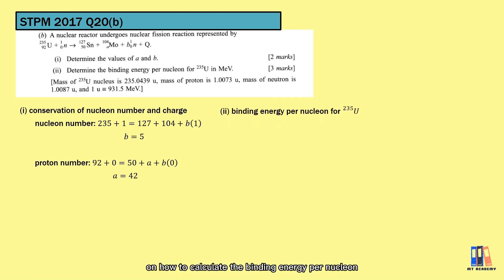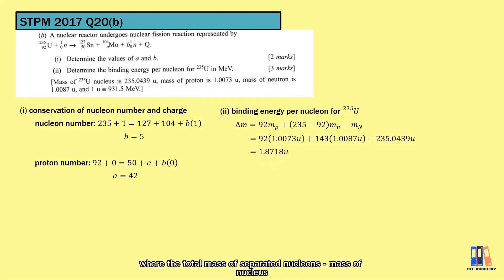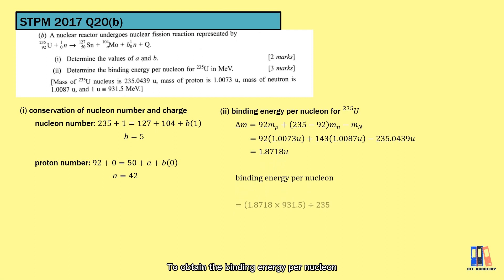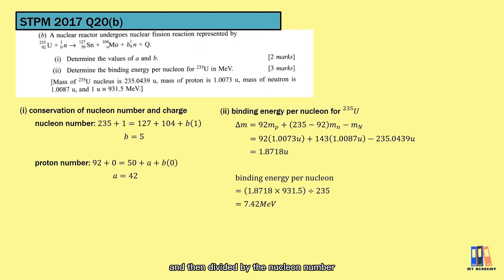Here we calculate the binding energy per nucleon again. First, obtain the mass defect: total mass of separated nucleons minus the mass of the nucleus, which equals 1.8718 U. To obtain binding energy per nucleon, convert the mass to energy using the conversion given in the question, then divide by the nucleon number. The final answer is 7.42 MeV.